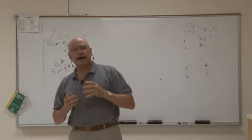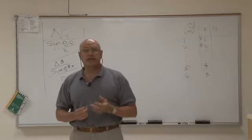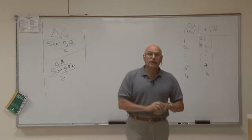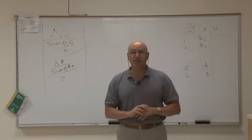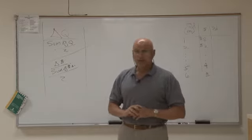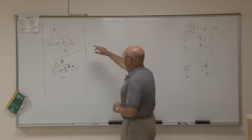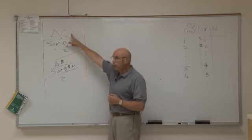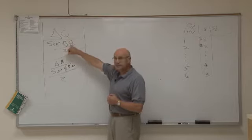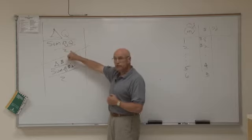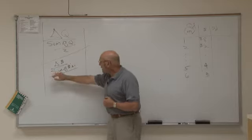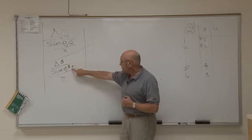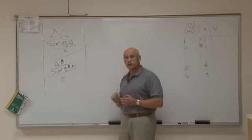There are two ways that we can measure how elastic a particular good is to a change in price. One way is through the use of the midpoint formula. The midpoint formula tells us that we take the change in quantity divided by the sum of the quantities divided by two, then divide all of that by the percentage change in price divided by the sum of the prices divided by two.